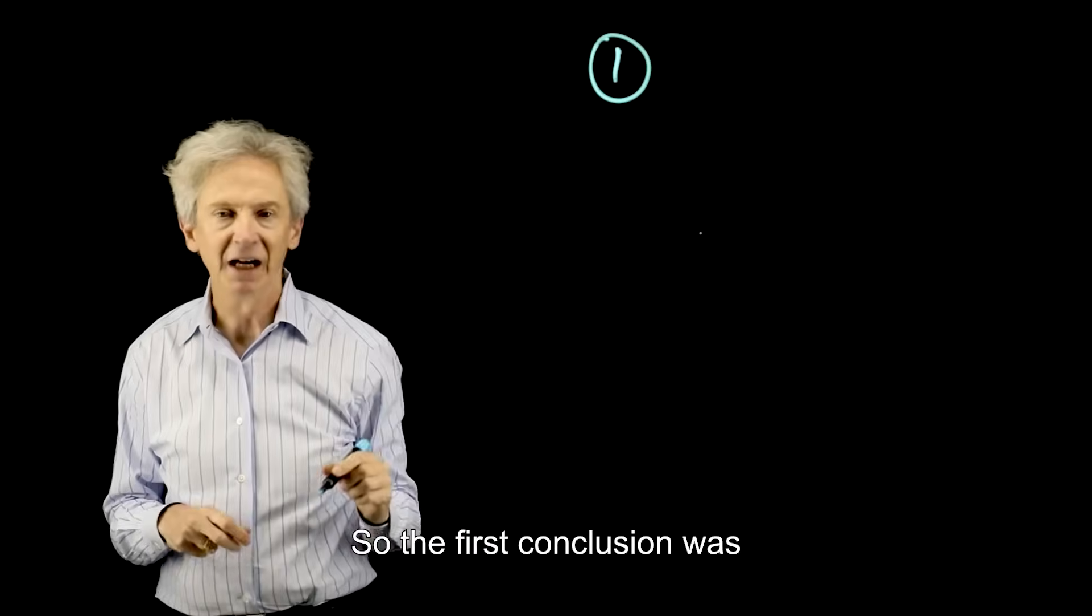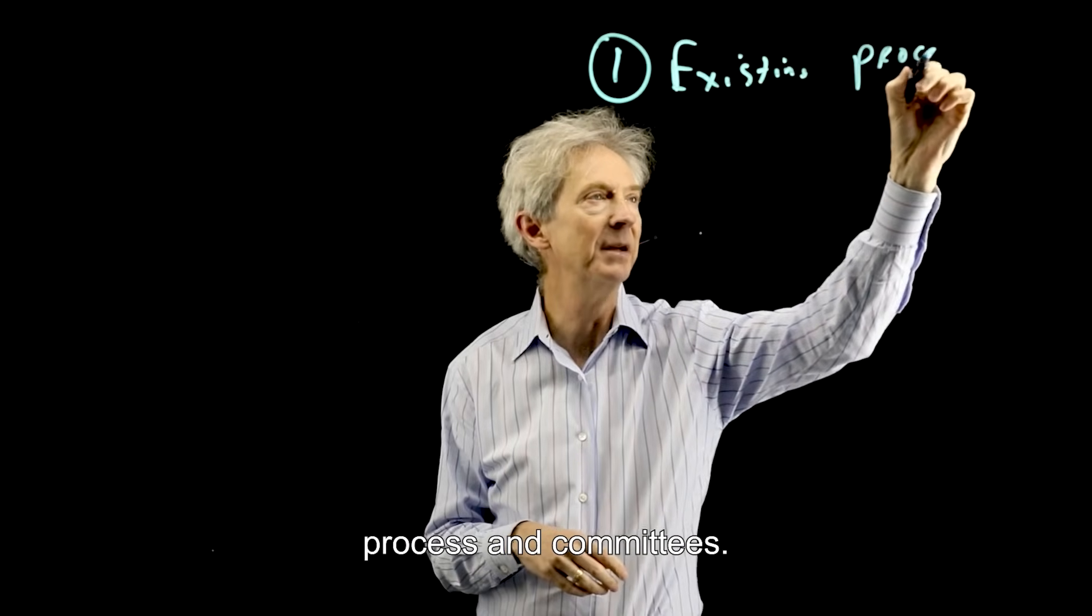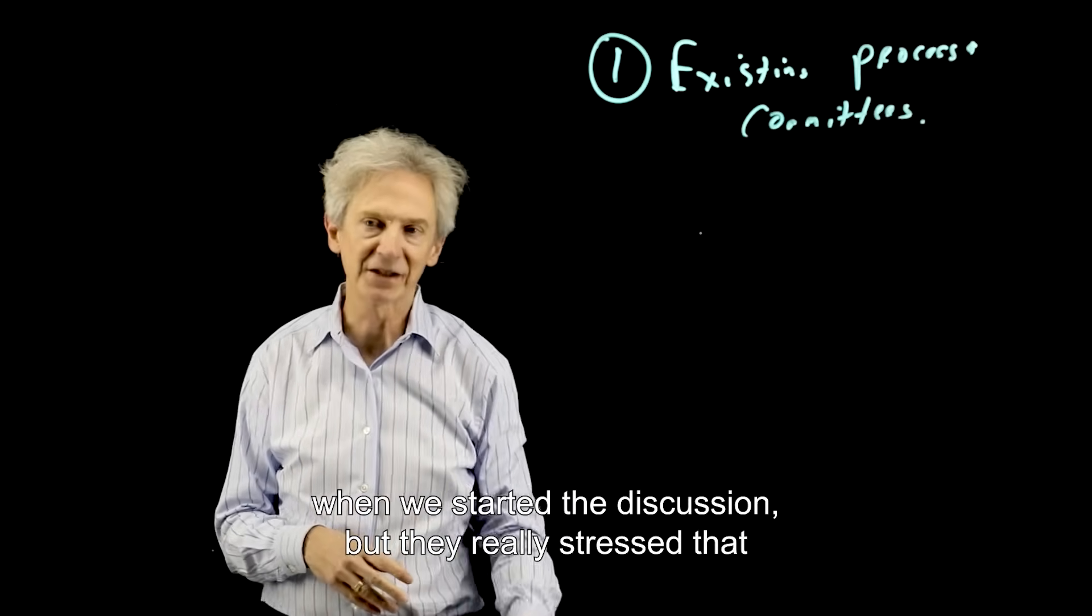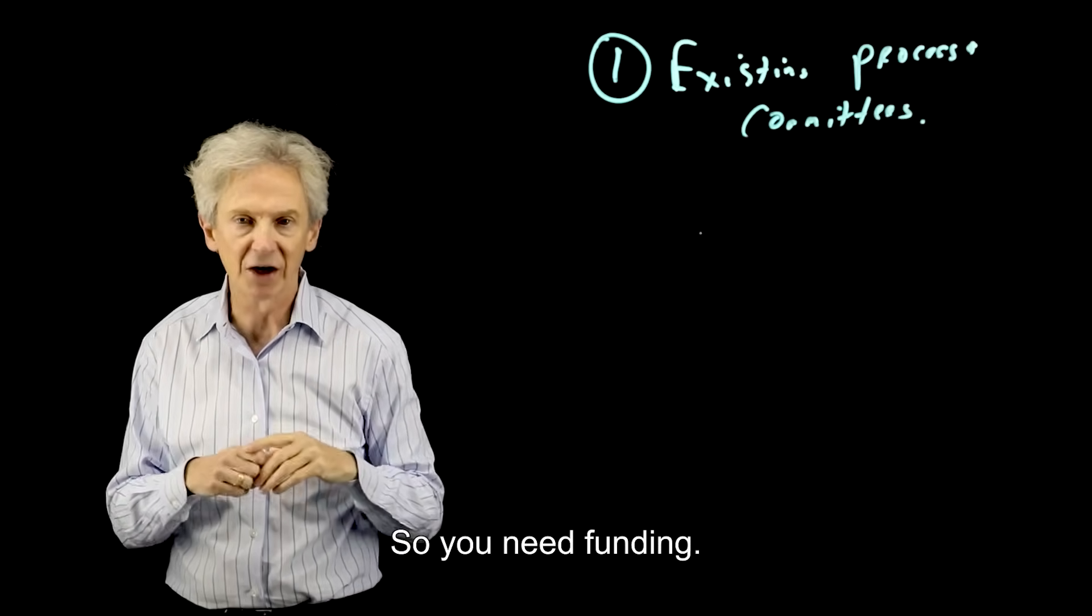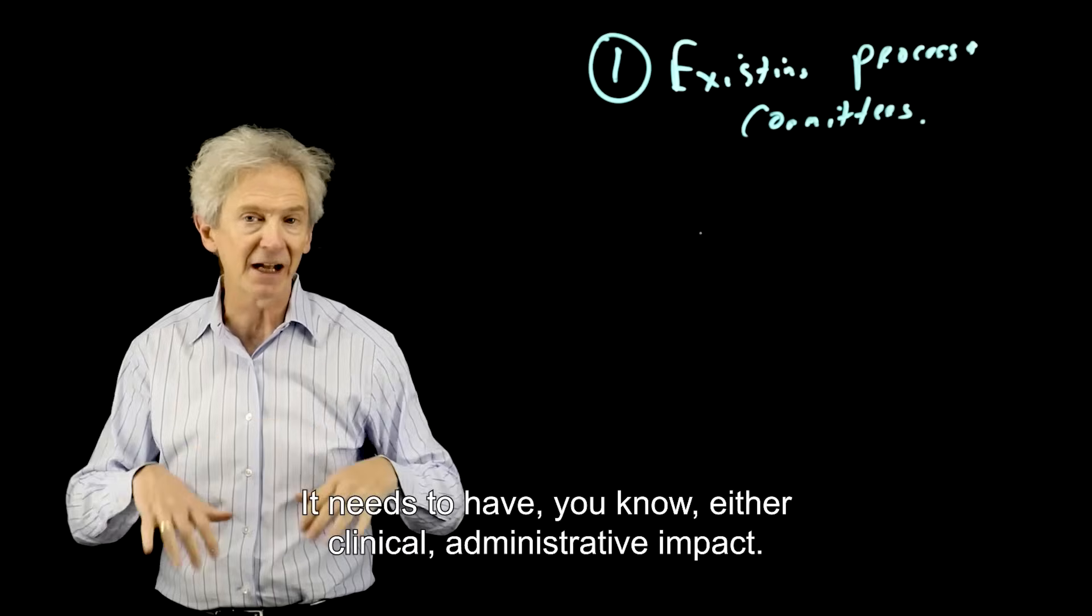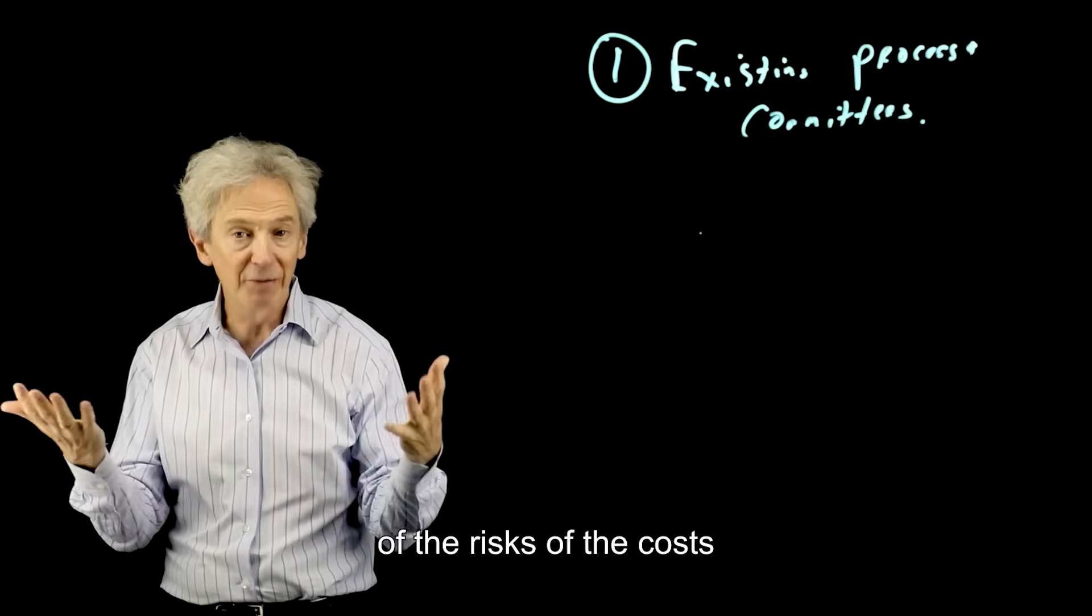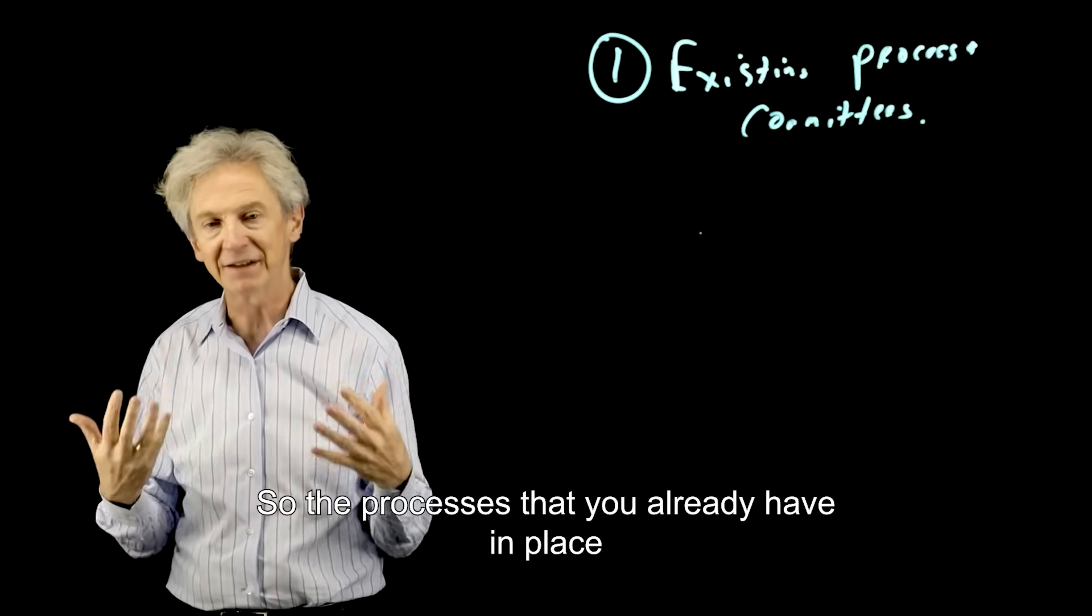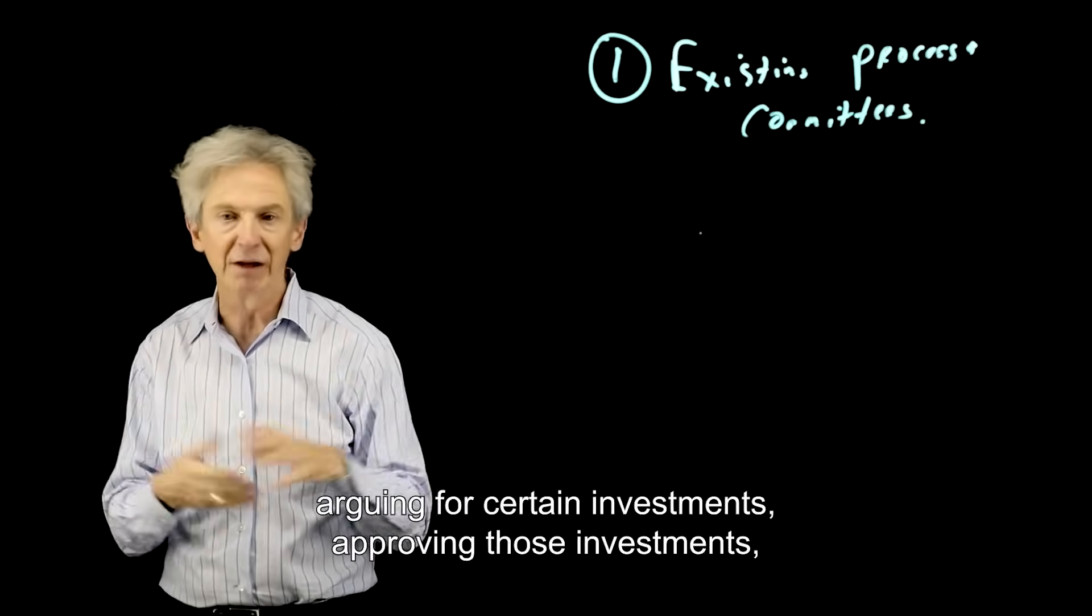So the first conclusion was that you should use existing process and committees. There's a real stress - I thought it was going to be a little bit different when we started the discussion, but they really stressed that AI is kind of just like everything else in a lot of ways. So you need funding, it needs to have clinical or administrative impact, there needs to be an ROI, there needs to be an assessment of the risks, of the costs, of the business case, all that stuff. So the processes that you already have in place with different committees recommending technology, arguing for certain investments, approving those investments,